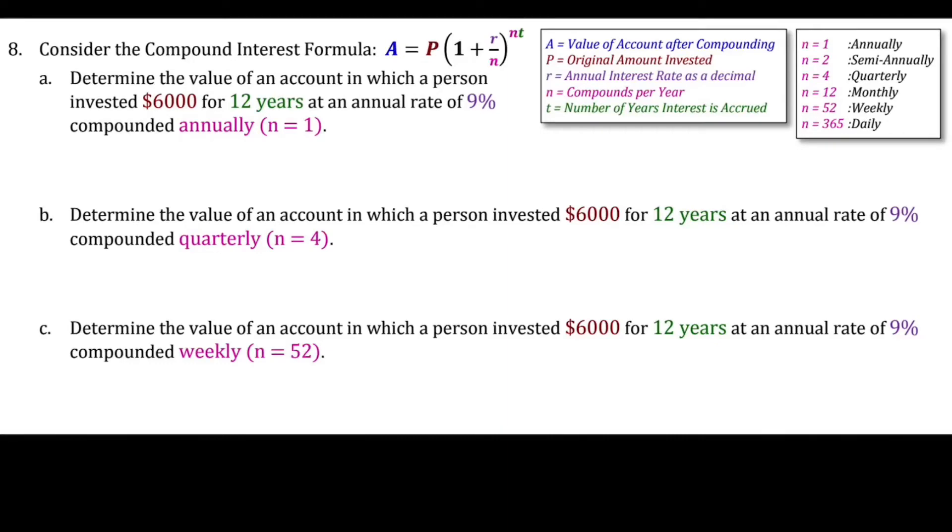Hey everybody. In this problem we're going to be looking at compound interest. Compound interest always follows this formula: A equals P times the quantity 1 plus R over N, raised to the NT power.